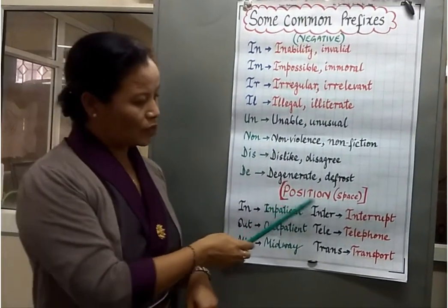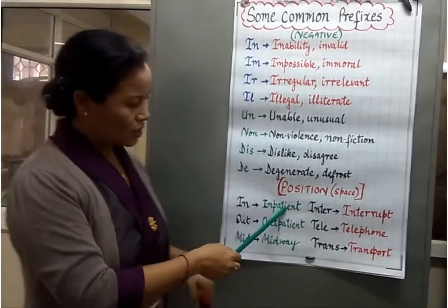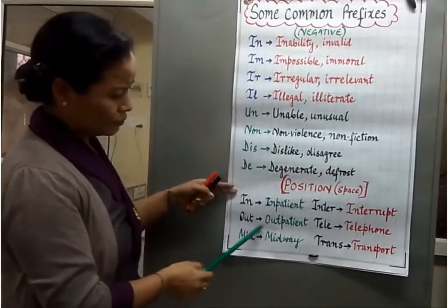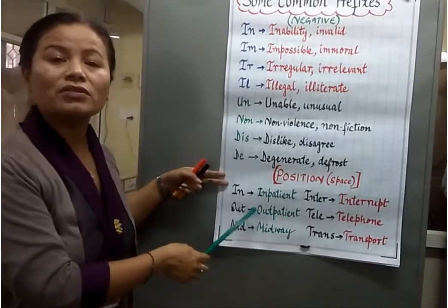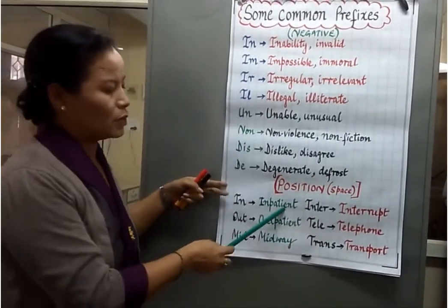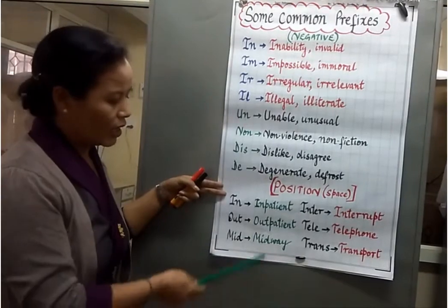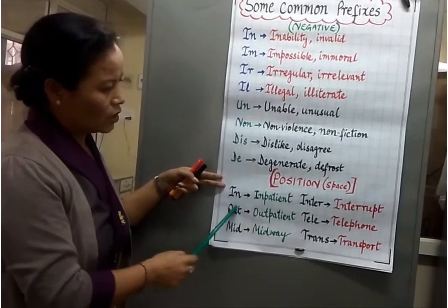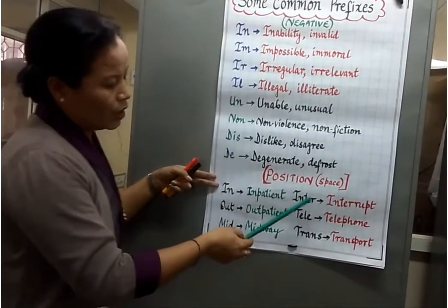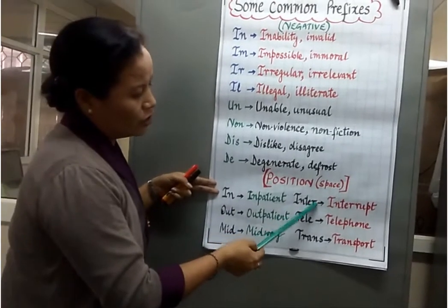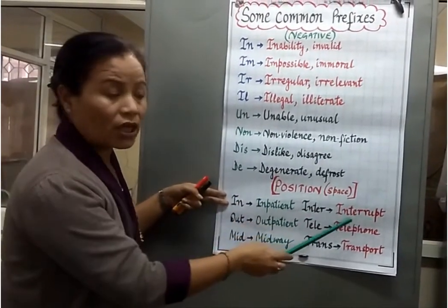Then we have prefixes of position. For example, 'inpatient' and 'outpatient' — in hospitals we often see these words. Then you have 'mid': midway, midnight. Then 'inter,' which means between: interrupt, interfere.